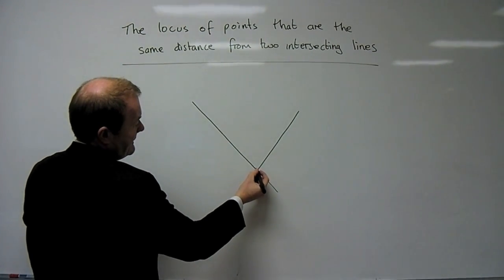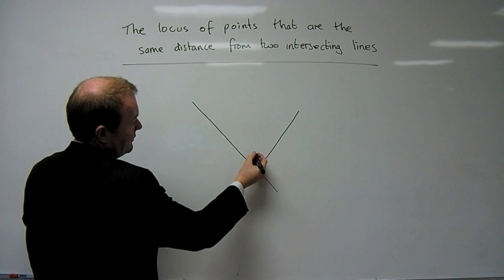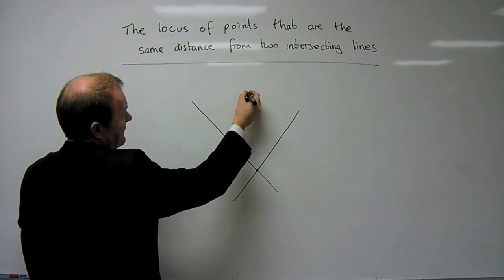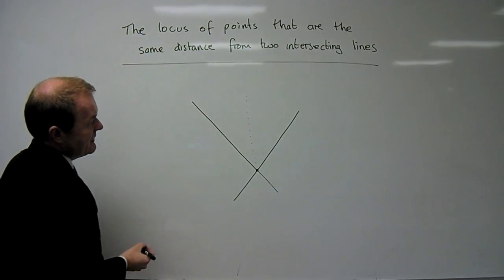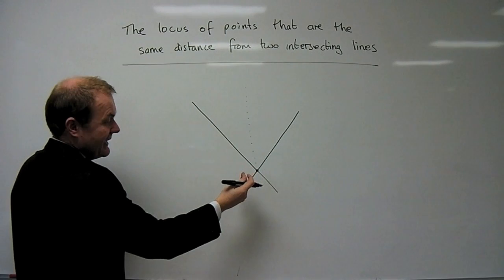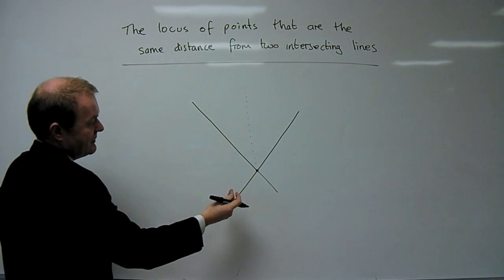And if I maintain that, what happens is I end up with a line that bisects that angle. And I've purposely used that phrase because in a previous video we've looked at a construction of bisecting an angle and that ties together very nicely with this locus.